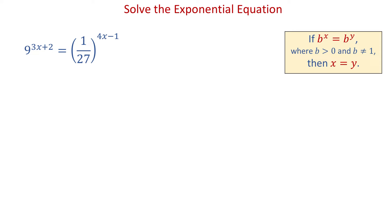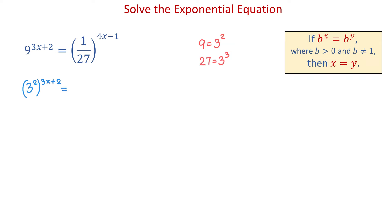In the given equation, on one side the base is 9, and on the other side the base is 1 over 27. Notice that both 9 and 27 represent powers of 3. We can write 9 as 3 squared, and we can write 27 as 3 cubed. So in this equation, we will replace 9 with 3 squared and replace 27 with 3 cubed. Then we will have 3 squared raised to the 3x plus 2 equals 1 over 3 cubed raised to the 4x minus 1.